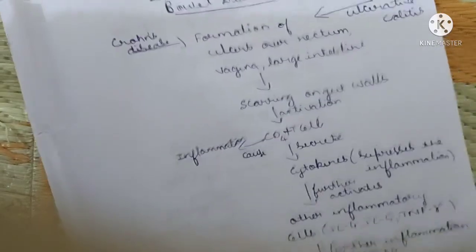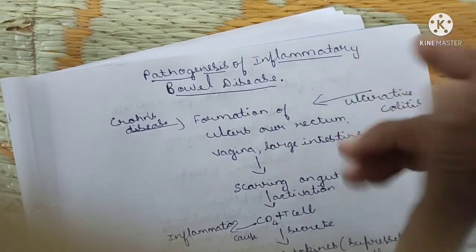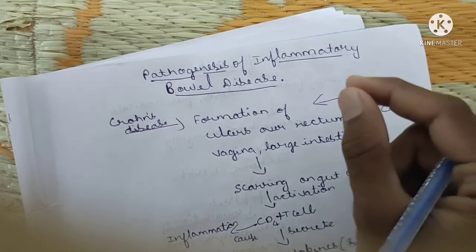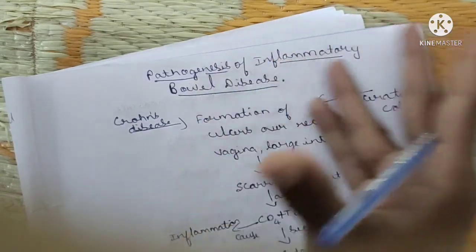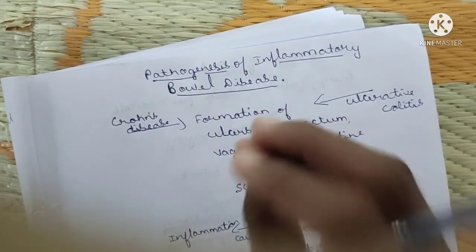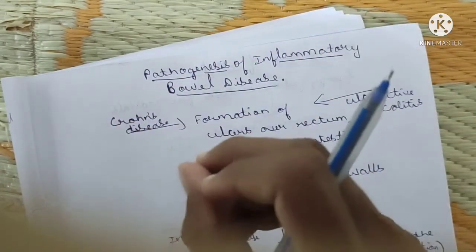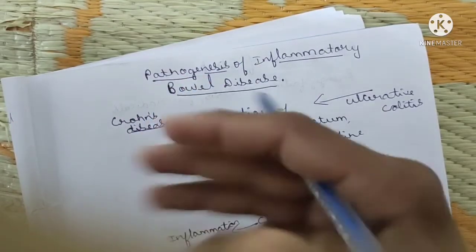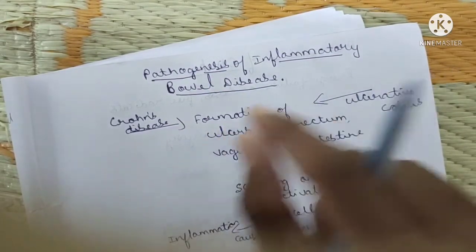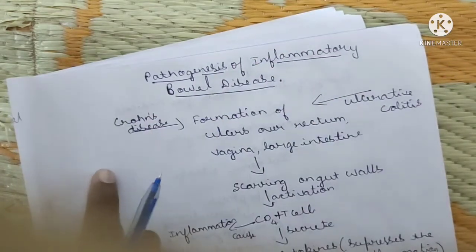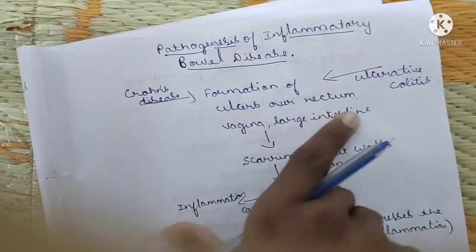Next is the pathogenesis of inflammatory bowel disease. Bowel disease involves the large intestine or rectum and anus. Due to inflammation in these areas, bowel diseases occur. The main symptom is continuous diarrhea, with continuous excretion of ammonia waste products.